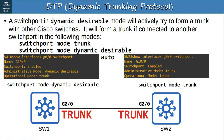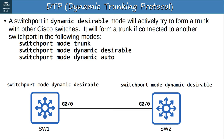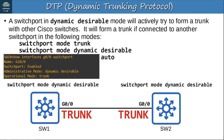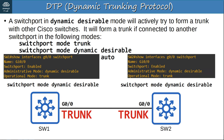On SW2, both the administrative mode and operational mode are trunk. If both interfaces are configured in dynamic desirable mode, they will both form a trunk. Even if manually configured as a trunk, an interface still sends DTP frames out of the interface.